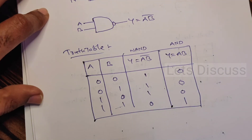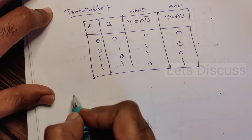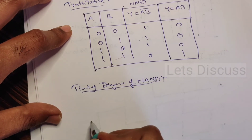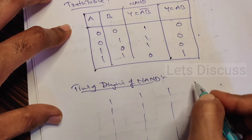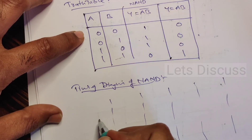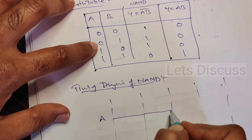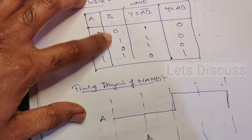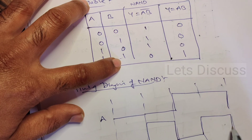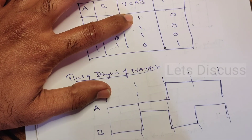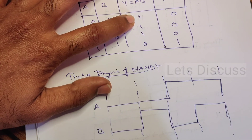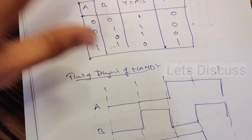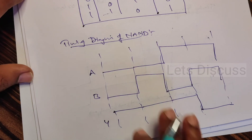Let's check with the timing diagram of NAND gate. We have four time cycles. A is: zero, one, one, one. B is: zero, zero, one, one — wait, initially zero, second cycle one, again zero, again one. The NAND gate output is: initially high, second time cycle high, third time cycle high, and the fourth time cycle it is low. This is the timing diagram of NAND gate — that is all about NAND.